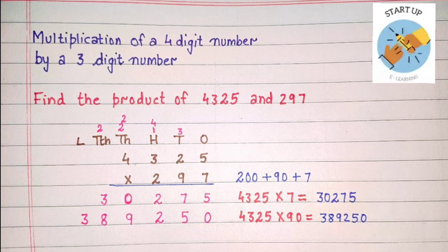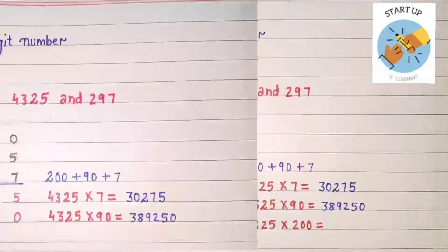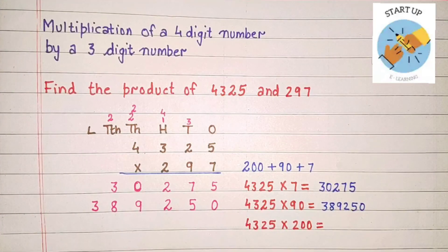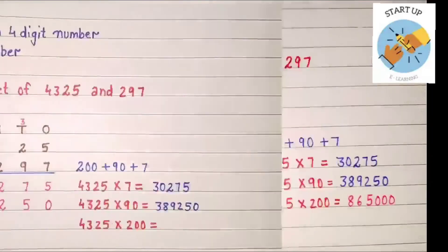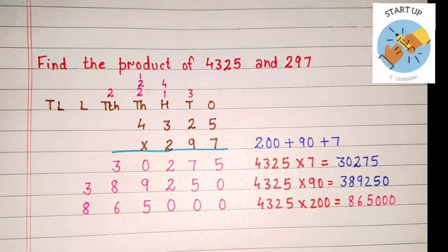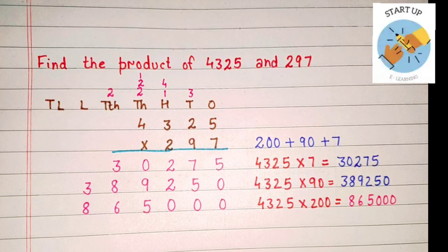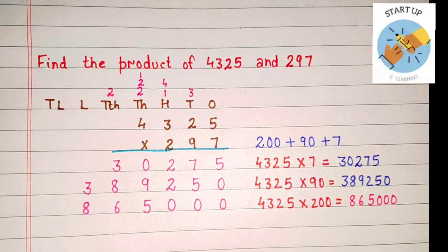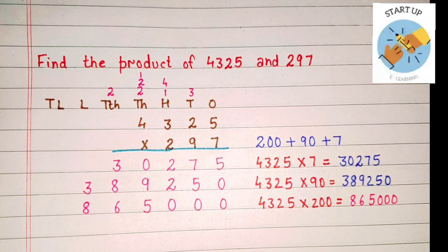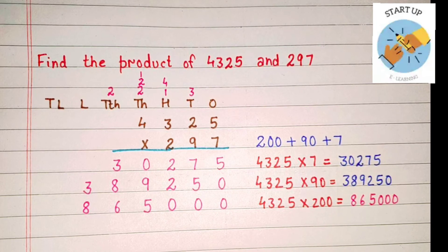By multiplying 4325 by 90, we got the second partial product: 389,250. Now we will multiply 4325 by 200. Since we are multiplying by the hundreds place digit, we will write zero at ones and tens place. Now let's start: 2 multiplied by 5, the digit at ones place — two fives are 10. Zero will be written under hundreds place and 1 carried to thousands place.